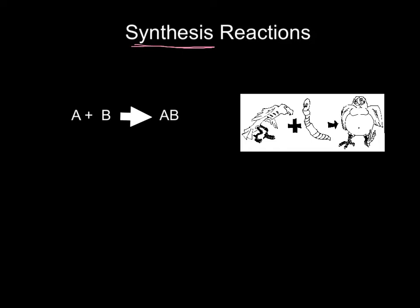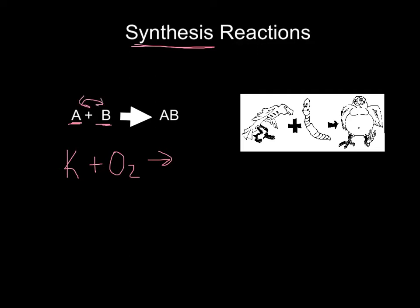If you look at this cartoon over here, you can see we had this skinny vulture bird over here, and he's obviously going to eat this worm. This is what we had before the reaction took place. After he eats the worm, the worm and the bird are really together, even though it just looks like the bird. The A plus B produces AB is just generic, so we're going to write an actual formula. Potassium, K, reacts with oxygen, O2, because it's diatomic, to produce a product. Now if this is a synthesis reaction, when you look at the reactants you see a single element and another single element.